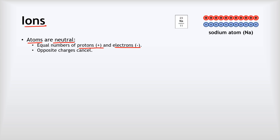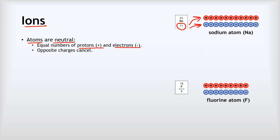For example, sodium has the atomic number of 11, which means it's got 11 protons and 11 electrons, so all the positives and all the negatives cancel to leave you with no charge. Similarly for fluorine — fluorine has an atomic number of 9, so it's got 9 protons and 9 electrons, and all the positives and negatives cancel to leave the fluorine atom with no overall charge.